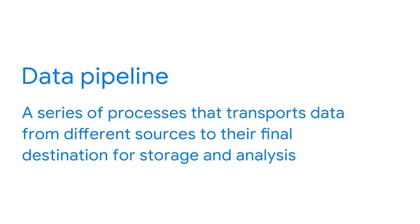So far, we've been learning a lot about how data is organized and stored within data warehouses and how schemas describe those systems. Part of your job as a BI professional is to build and maintain a data warehouse. To help smooth this process, we use data pipelines. A data pipeline is a series of processes that transports data from different sources to their final destination for storage and analysis. This automates the flow of data from sources to targets while transforming the data to make it useful as soon as it reaches its destination. Data pipelines define what, where, and how data is combined.